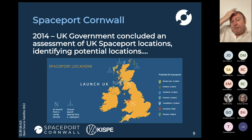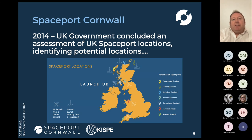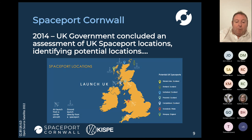Back in 2014, the UK government did an assessment. The UK is the only country in the world to ever develop a launch vehicle, build a satellite, launch it, and then abandon the programme. So 50 years later, we're now in the process of re-establishing launch from the UK. The government looked for suitable locations for both horizontal and vertical launch sites, identifying a number of locations for deployment of small spacecraft into low Earth orbit.